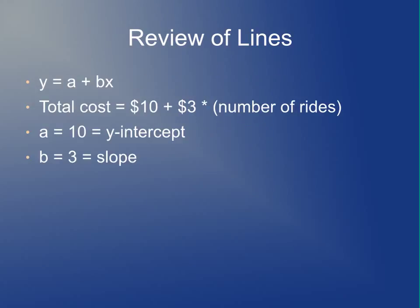In general, a straight line — or a linear function as it's known — can be modeled as y equals a plus b times x. In this case, a, known as the y-intercept, is equal to 10, and b, known as the slope, is equal to 3.